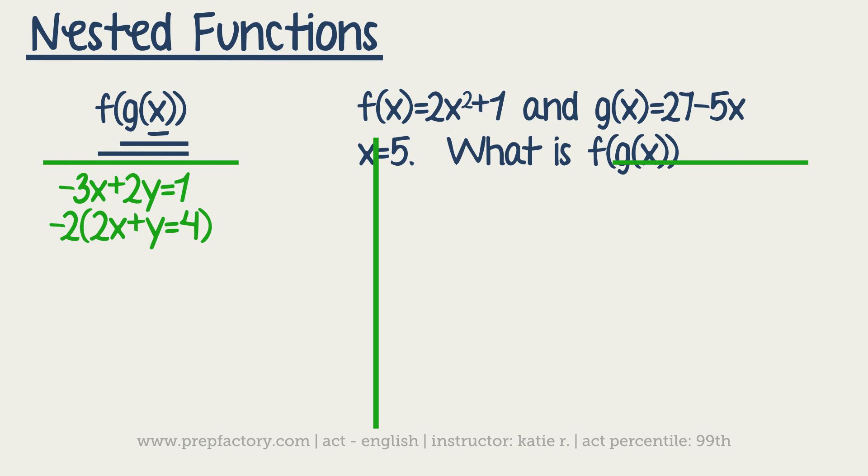Our next step is to put that into f of that number. So now all we have to do is put in f of 2. So we've got f of 2 equals 2 times 2 squared plus 1. So we have 2 times 4 plus 1, or 9.